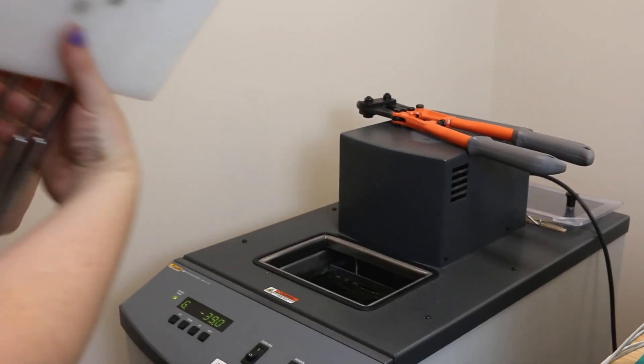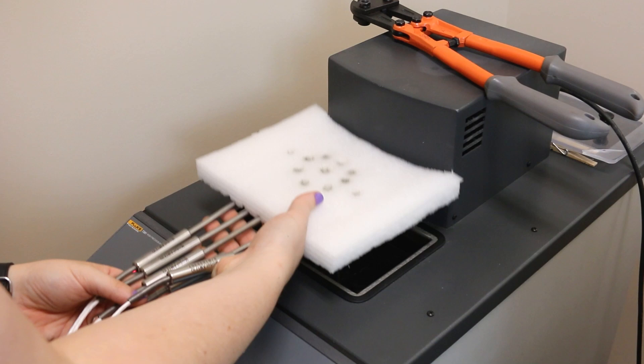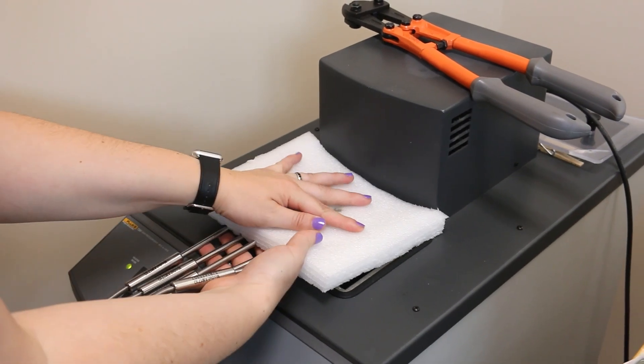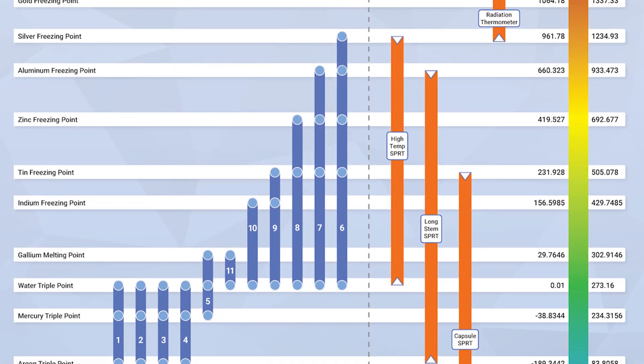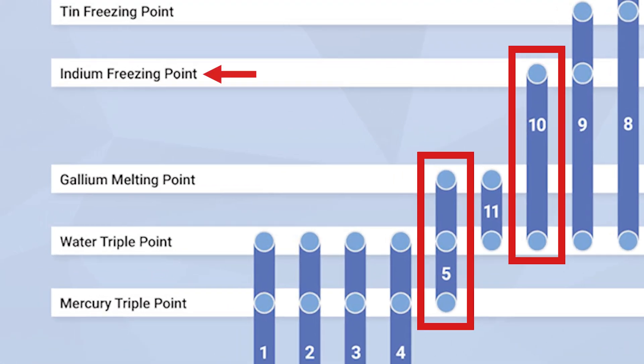This video will take a look at how the 286 can be used as a temperature bridge to perform a repeatable comparison calibration of five different temperature probes. The ITS-90 subranges used in this demonstration will be 5 and 10, which cover the freezing point of indium, the melting point of gallium, the triple point of water, and the triple point of mercury.